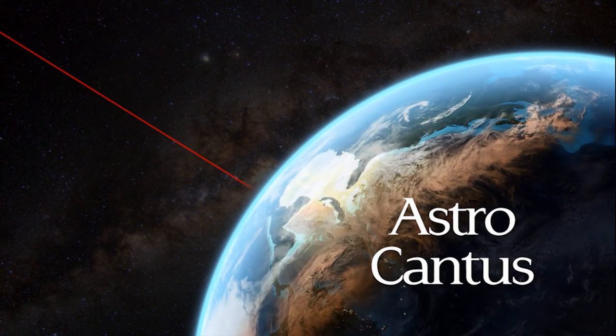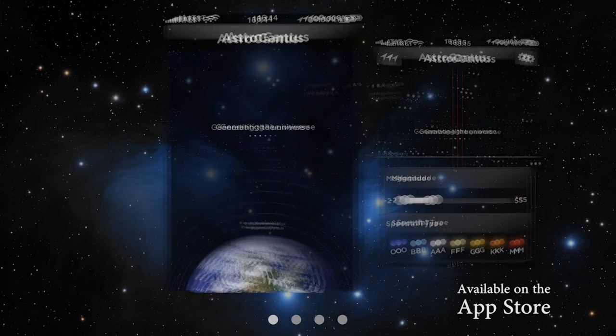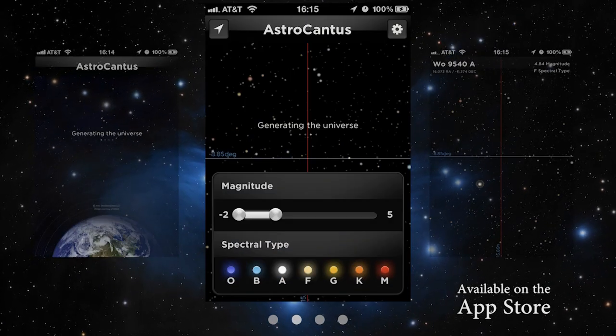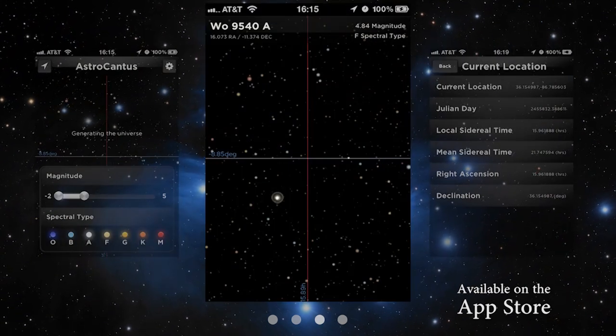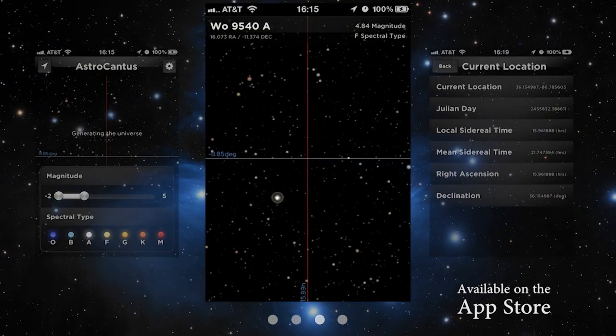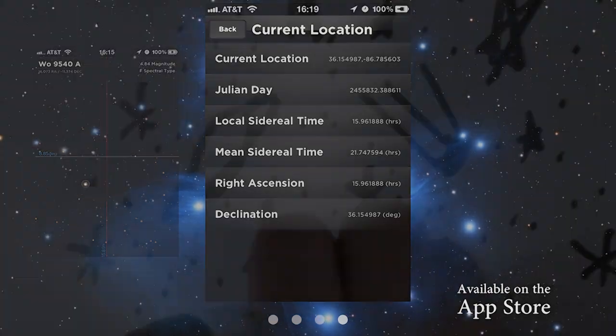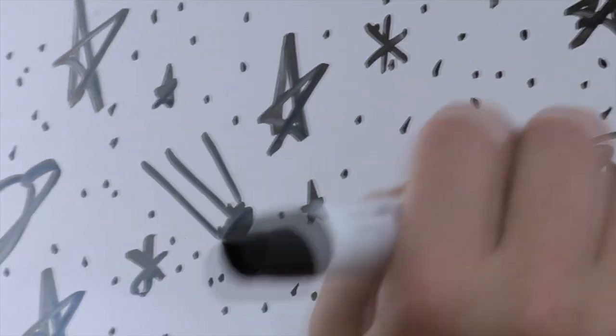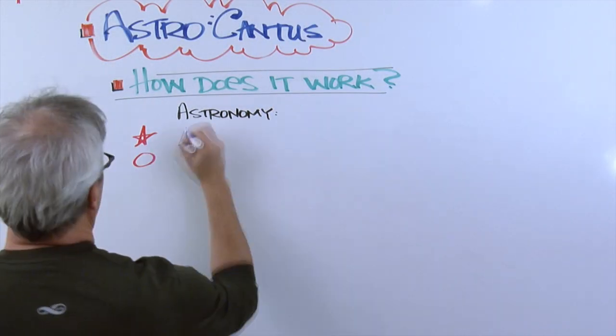Astrocantus is Latin for star song and it's also a mobile application that translates data about stars into music. Stars are assigned one of seven spectral types that correspond to their basic color, and these are abbreviated O B A F G K and M.